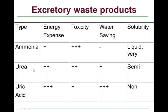Urea is more complex than ammonia, so it has more energetic expense to build. Its toxicity is reduced, and it has a little bit of water savings because it's not as toxic. It's semi-soluble. Urea is the primary excretory waste product of adult amphibians and mammals, including humans. Urea is also a plant fertilizer because it contains nitrogen, one of the limiting nutrients for plants.